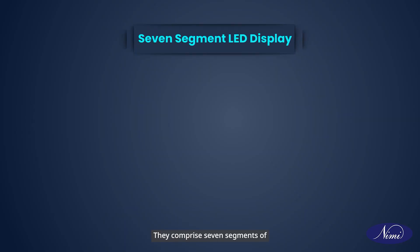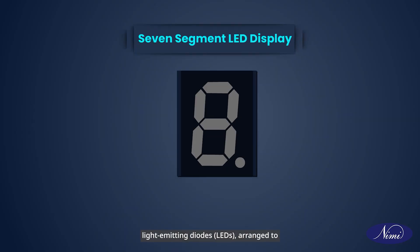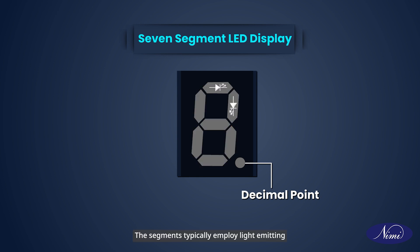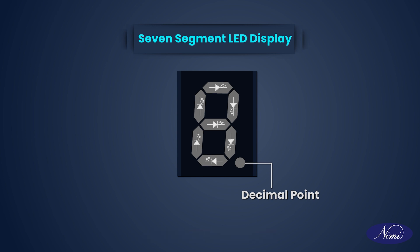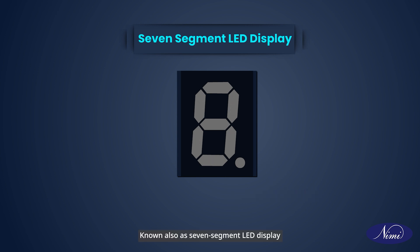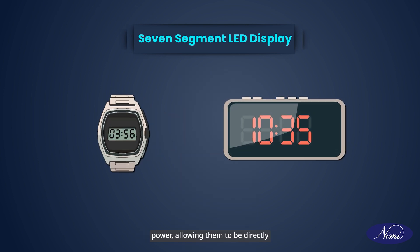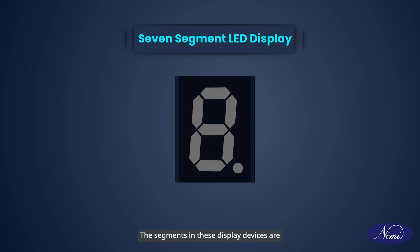Seven segment displays comprise seven segments of light emitting diodes arranged to form the number 8, along with a decimal point LED. The segments typically employ light emitting diodes made from gallium arsenide or phosphide. Known also as seven segment LED display devices, they function at low voltage and power, allowing them to be directly connected to integrated circuits.